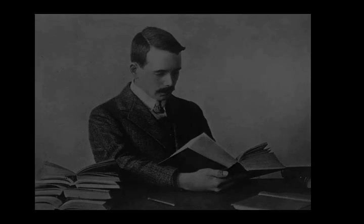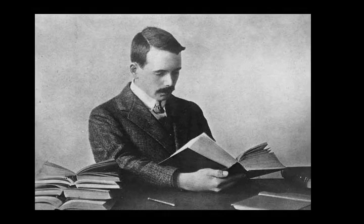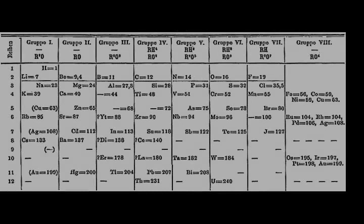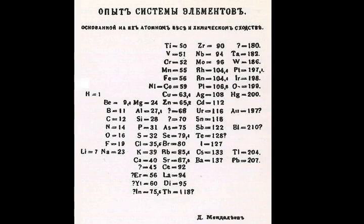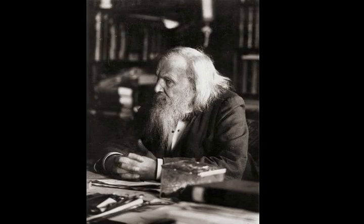The seventh row is likewise analogous to the sixth row: 7s fills, then 5f, then 6d, and finally 7p, with a few anomalies along the way. For a very long time, the seventh row was incomplete as most of its elements do not occur in nature. The missing elements beyond uranium started to be synthesized in the laboratory in 1940, when neptunium was made. The row was completed with the synthesis of tennessine in 2010, and the last elements in this seventh row were validated and given names in 2016.